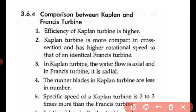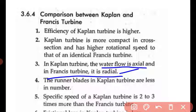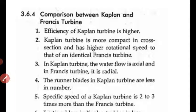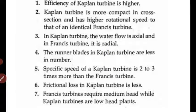An important difference: in the Kaplan turbine the water flow is axial, while in the Francis turbine it is radial. The runner plates in Kaplan turbines are fewer in number. The specific speed of the Kaplan turbine is 2 to 3 times more than the Francis turbine. Friction losses in the Kaplan turbine are less, and Francis turbines require medium head while Kaplan turbines are low-head plants.